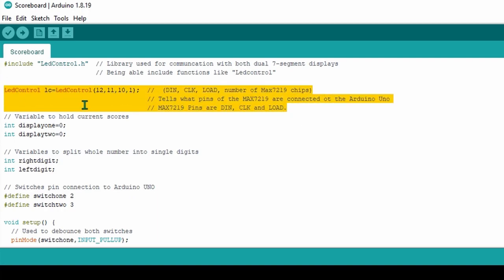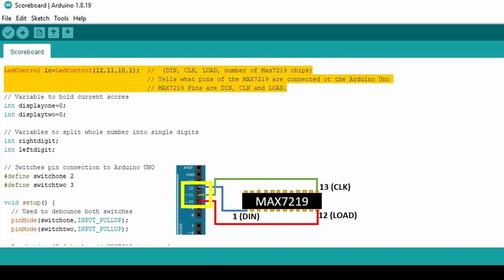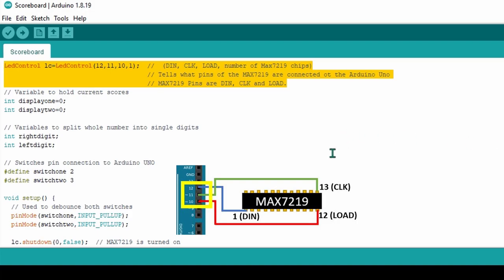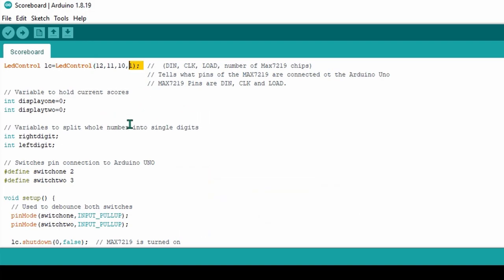The LED control function is used to define what pins of the MAX7219 LED driver are connected to the Arduino Uno. In this case, they are pins 12, 11, and 10. The 1 is included to signify that there is only one MAX7219 that is connected to the Arduino Uno.